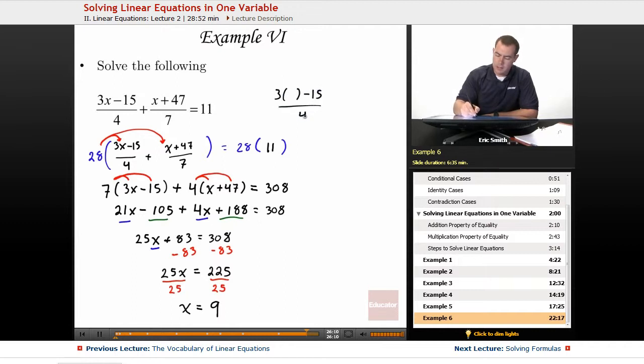So I have my 3 times x minus 15 all over 4 on one side. In both of those blank spots, let's go ahead and put that 9. All right, now let's start to simplify, see what we get.